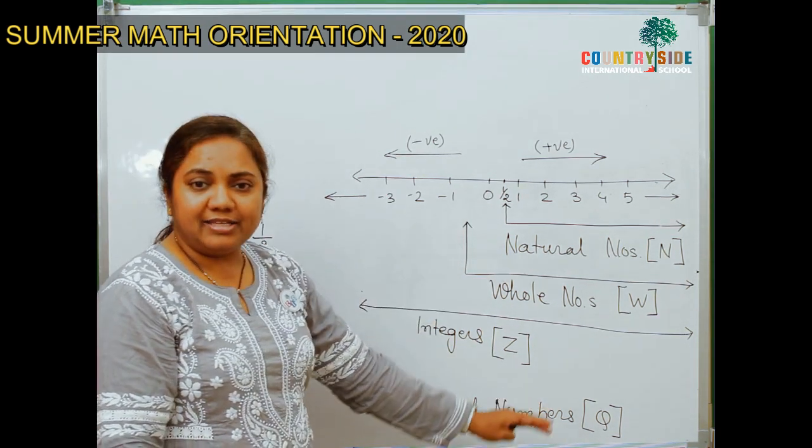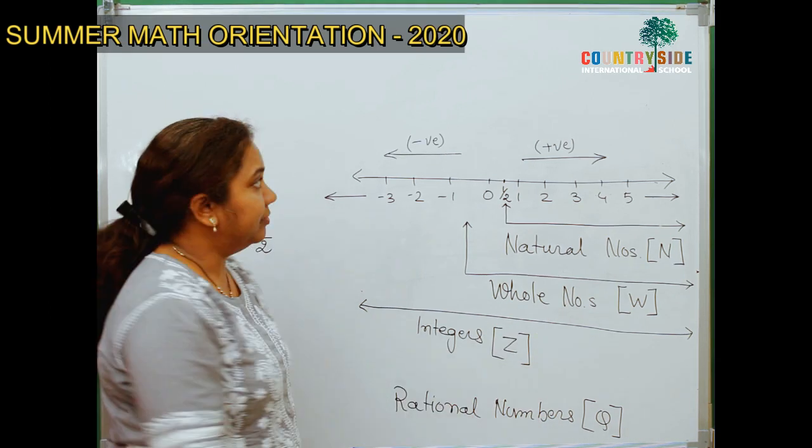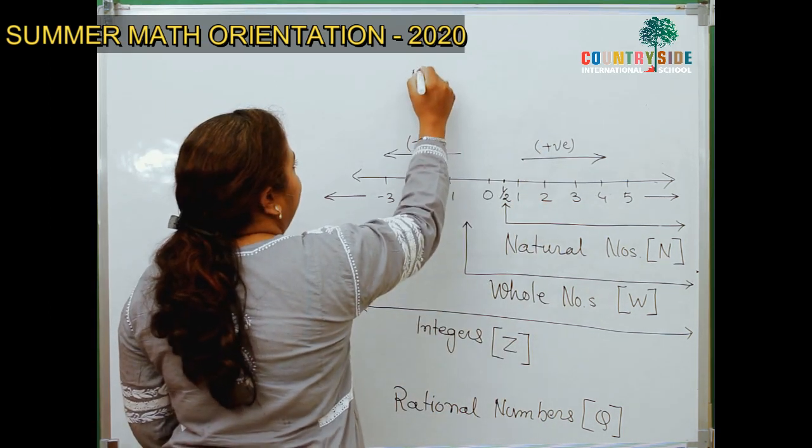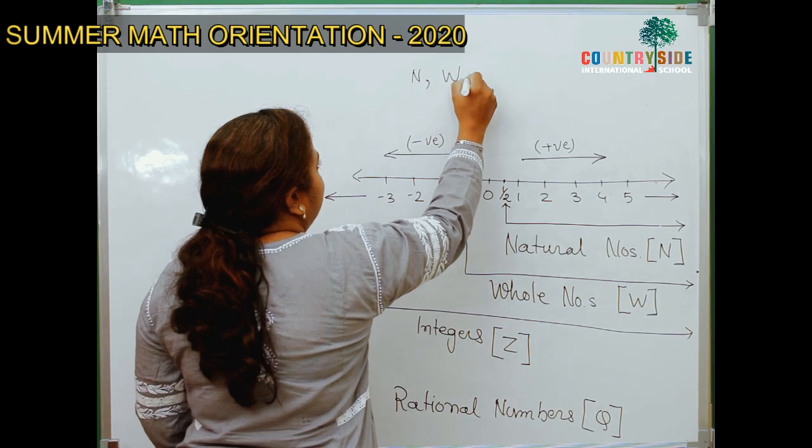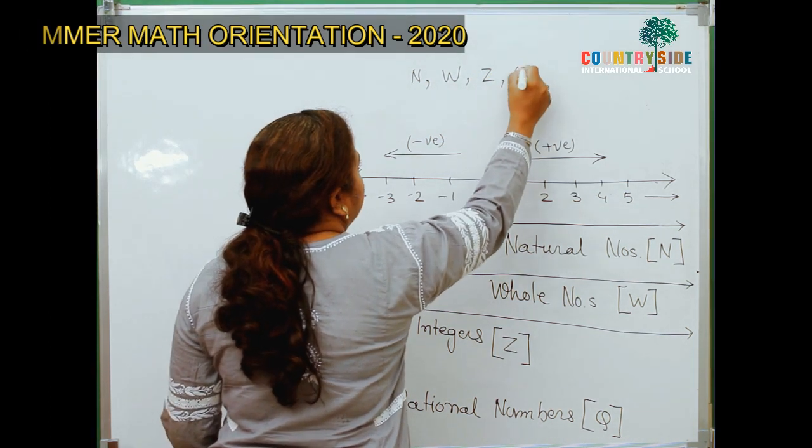So, this is the basic of number system. What we discussed? N, W, Z, Q.